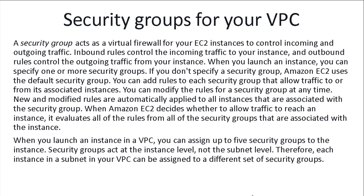You can add rules to each Security Group that allow traffic to or from its associated instances. You can modify the rules for the Security Group at any time. New and modified rules are automatically applied to all instances associated with the Security Group. When Amazon EC2 decides whether to allow traffic to reach an instance, it evaluates all the rules from all Security Groups associated with that instance.